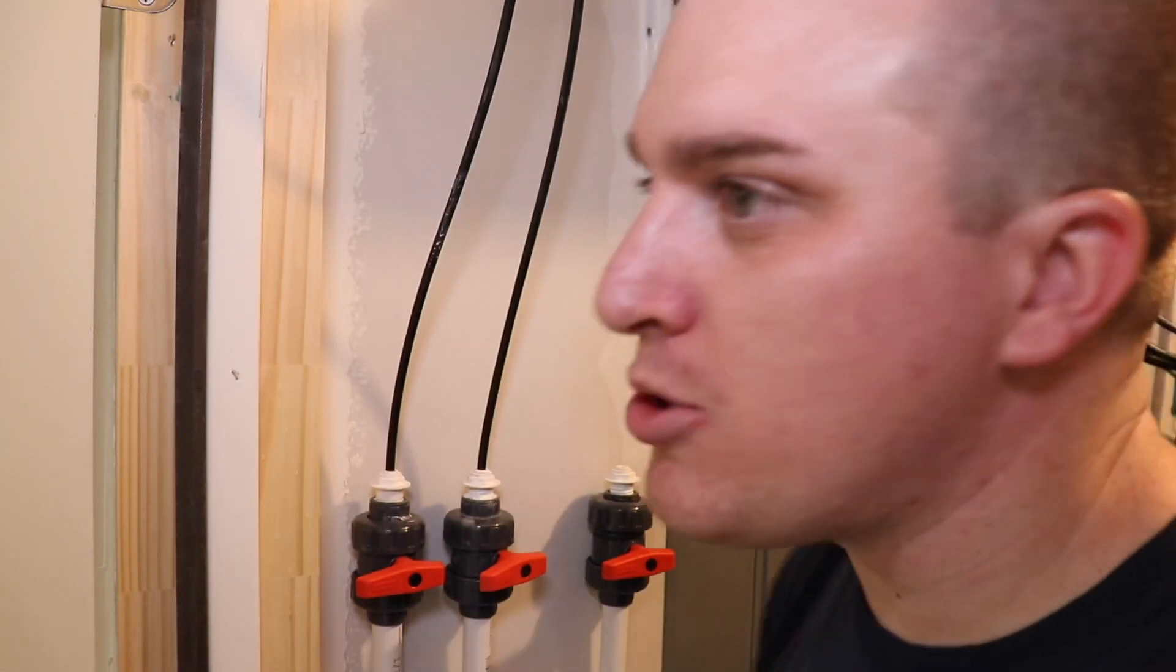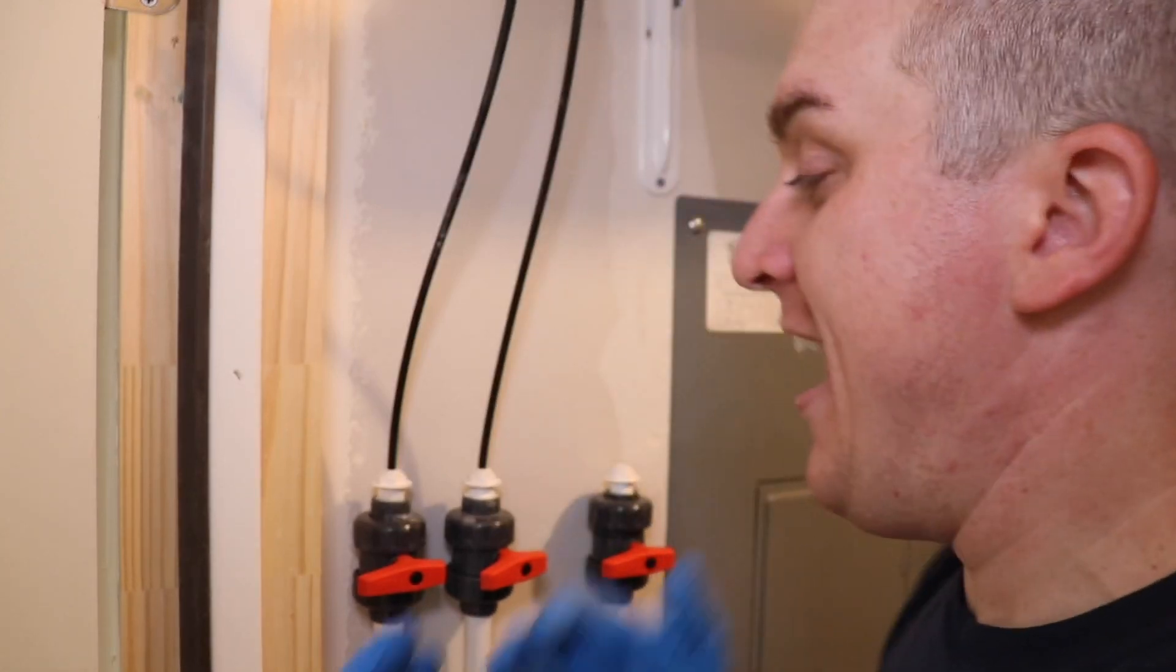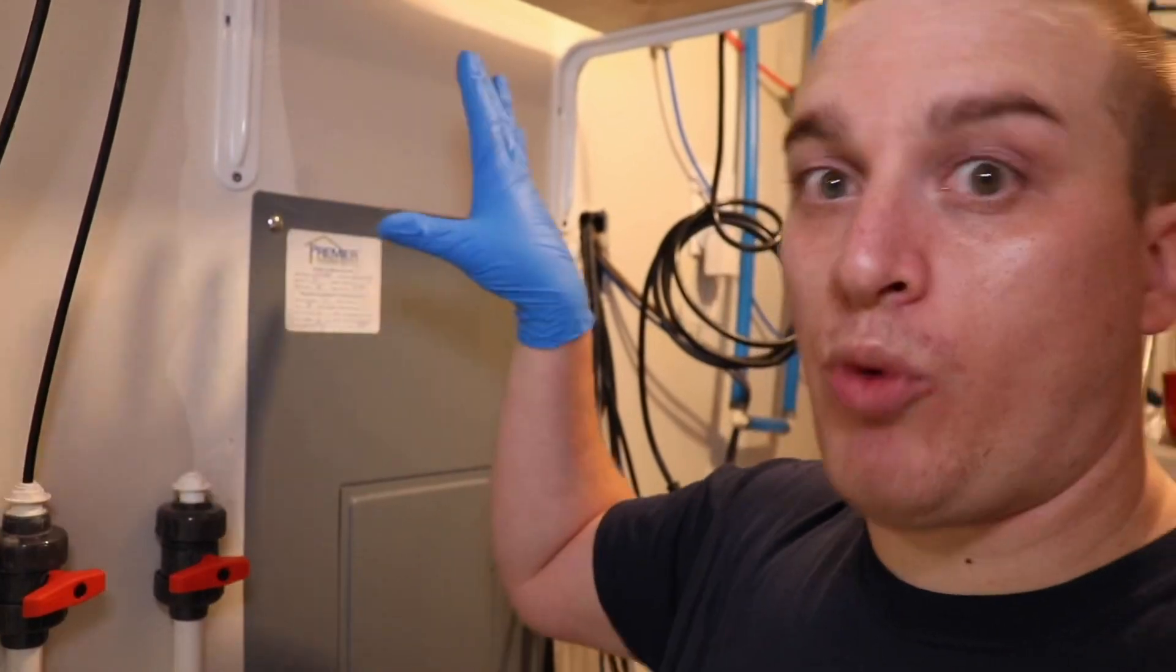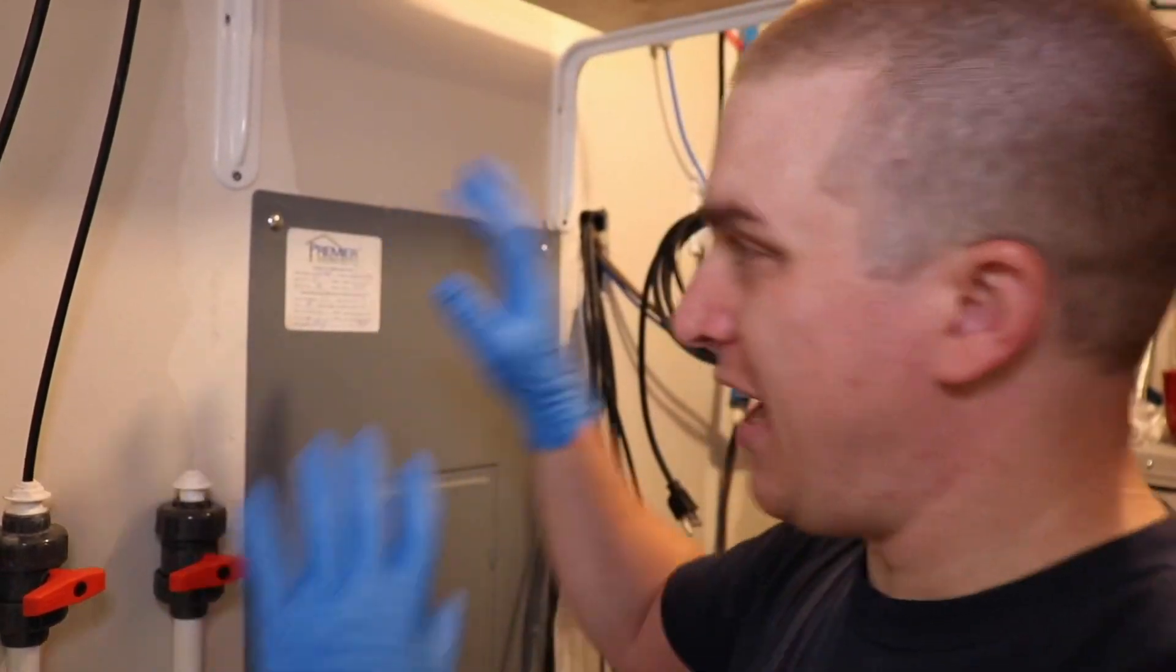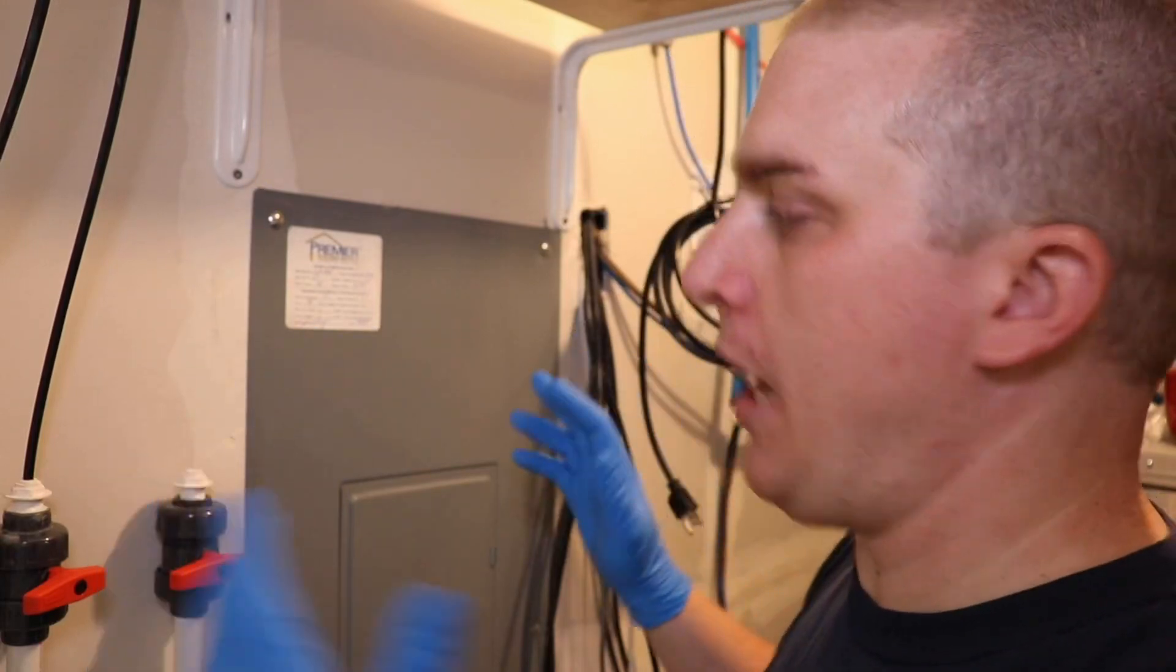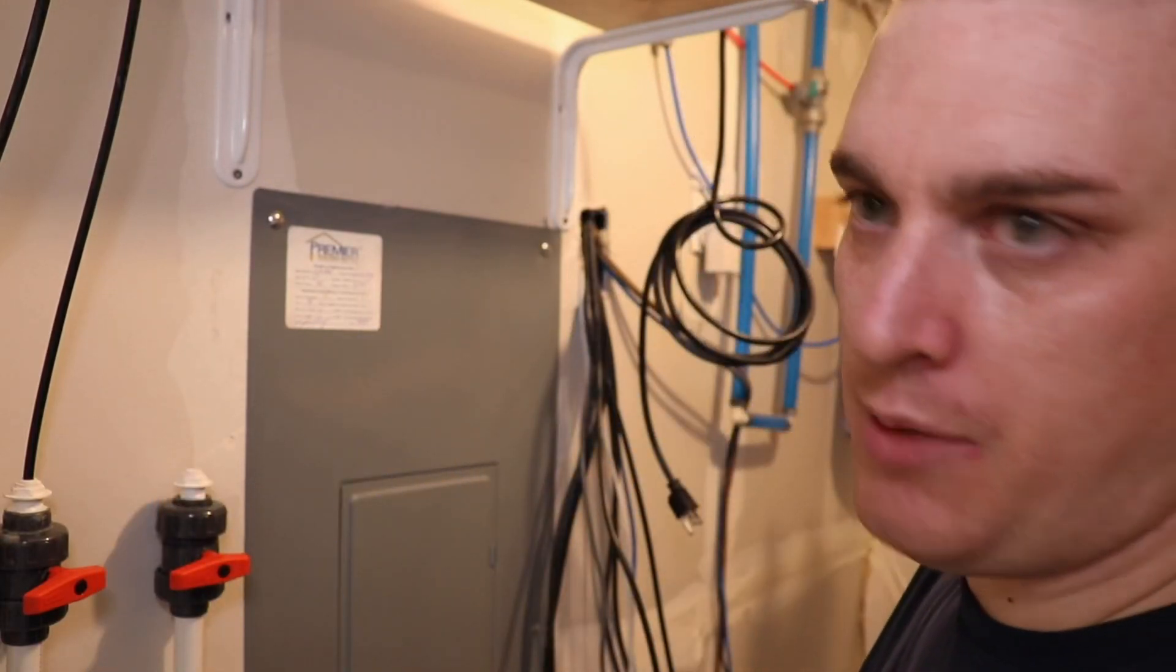We have one major problem that we absolutely need to address right away, and that is I actually messed up on the auto water change system. So we are in my utility room. I'm going to pan you around here. This is the room right adjacent to the fish room. Behind this wall is where the fish room is, and this is kind of the heart of the fish room. So we have the whole auto water change system back here.